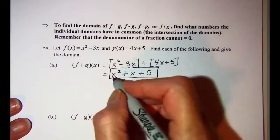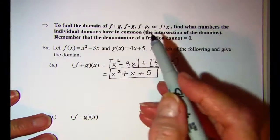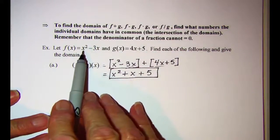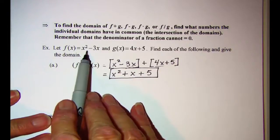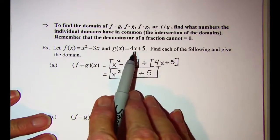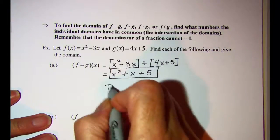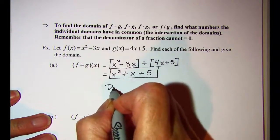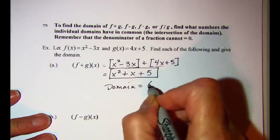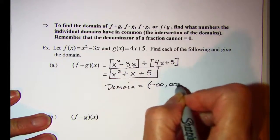Our domain—we want to find the individual domains and see what they have in common. Well, the domain of f of x is all real numbers. The domain of g of x is all real numbers. So our domain of our sum of the two will be all real numbers, which we show as negative infinity to positive infinity.